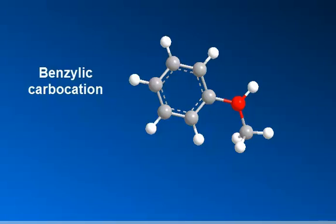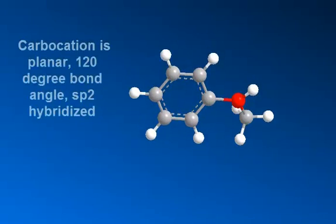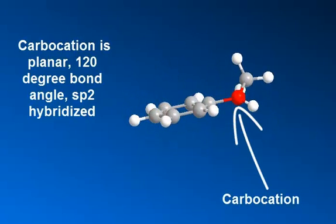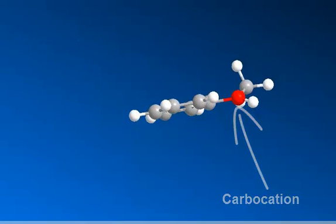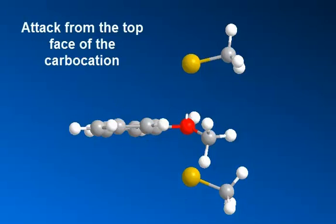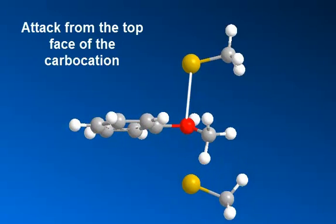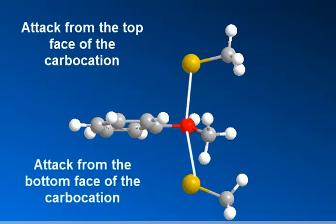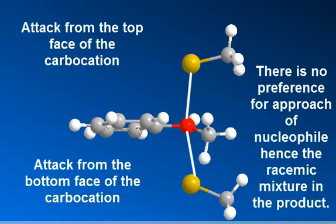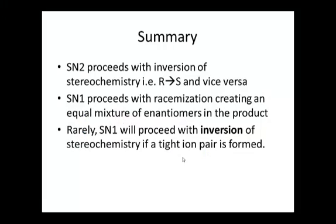Here's the benzylic carbocation in 3D — the red carbon is the carbocation. Flattening this out, you can see clearly that the red carbon is planar. When the nucleophile comes in, it can attack either side of this carbon — from the top or from the bottom. Attack from either face is the origin of the two enantiomers.